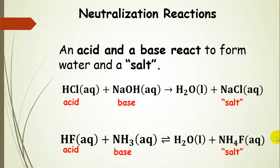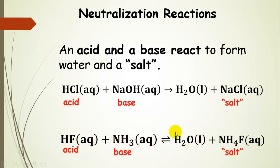When we react an acid and a base, we form water and a salt — this is called a neutralization reaction. For example, reacting a strong acid with a strong base produces water and sodium chloride, an ionic compound. Another example: reacting hydrofluoric acid with ammonia produces water and ammonium fluoride, which is also an ionic compound and a salt.